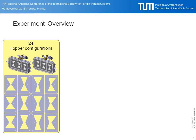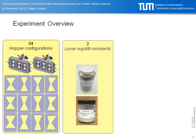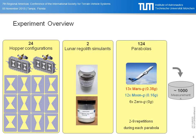This experiment rack was integrated into the aircraft. Summing it up: we had 24 different hopper configurations, two different lunar regolith simulants, and flew a total of 124 parabolas including four flight days with 13 Mars G, 12 Moon G, and 6 zero G parabolas per flight day. For these particular experiments we couldn't use the zero G parabolas because nothing would flow. We were able to repeat the experiments two to nine times during each parabola, with durations of 20 to 30 seconds, giving us just over a thousand measurements in total.